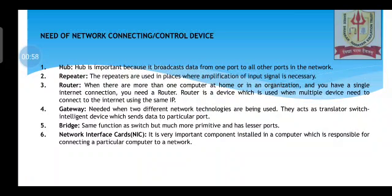Routers is one of the most important network connecting devices. When there are more than one computer at home and you have a single internet connection, you need a router. A router is a device which is used when multiple devices need to connect to the internet using the same IP. Regarding gateway, both gateway and router help us connect to the internet, but router works with a similar network whereas gateway works with a different network. Gateway is used when two different network topologies are being used, for example bus and star or bus and ring. It acts as a translator — an intelligent device which sends data to a particular port.